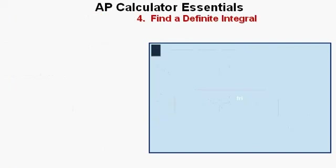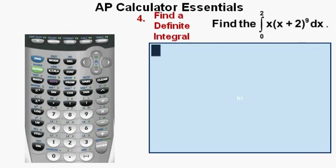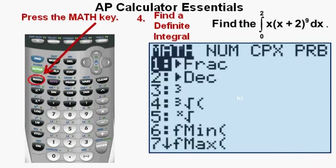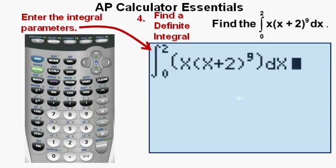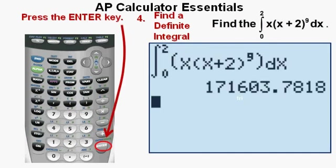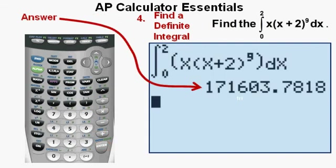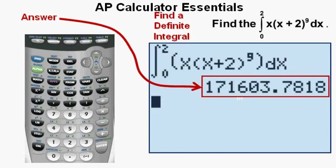The last skill is finding a definite integral. The problem: find the definite integral from 0 to 2 of x(x + 2)⁹ dx. Press the math key, then press 9 to get the definite integral option. We now have the definite integral template. Enter the limits 0 to 2 and the integrand x(x + 2)⁹. Press ENTER. The answer is 171,603.7818, which we box in as correct.